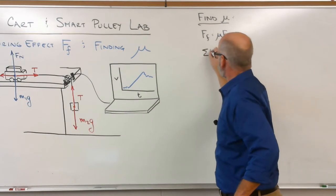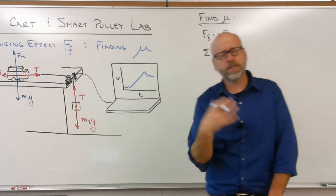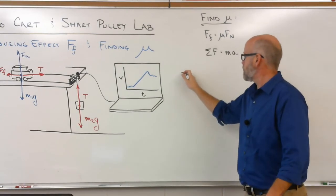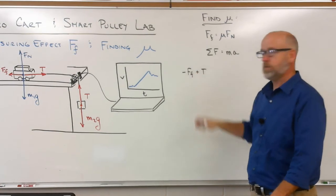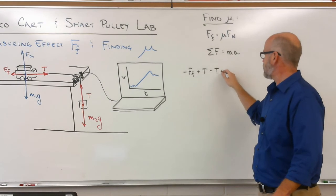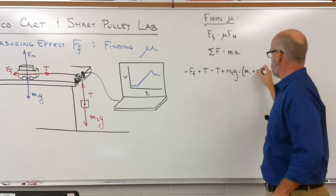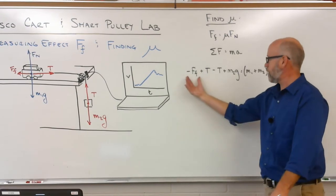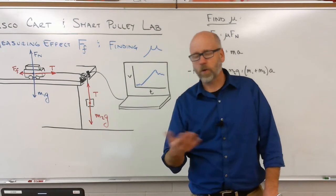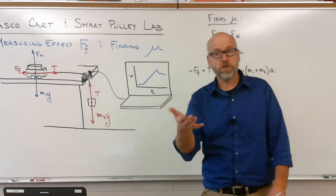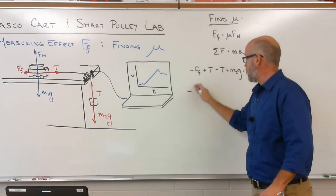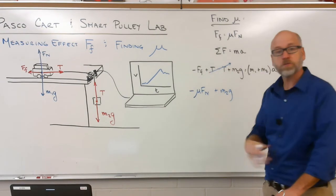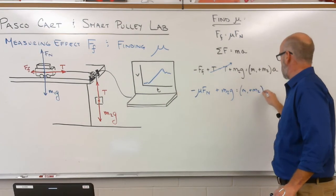I'm going to go to the sum of the forces causes the mass to accelerate. And let's look at that in the direction of motion. So in the direction of motion, we are going to have minus friction, plus tension, minus tension, plus M2G causes the mass of the system to accelerate. And while you may be tempted to plug in what we know and solve for force of friction, varsity level physics is going to substitute in for that force of friction to introduce mu into this formula. So I'm going to go ahead and plug in that the force of friction is mu times the normal force plus M2G. Obviously those tensions cancel out, causes the masses to accelerate.